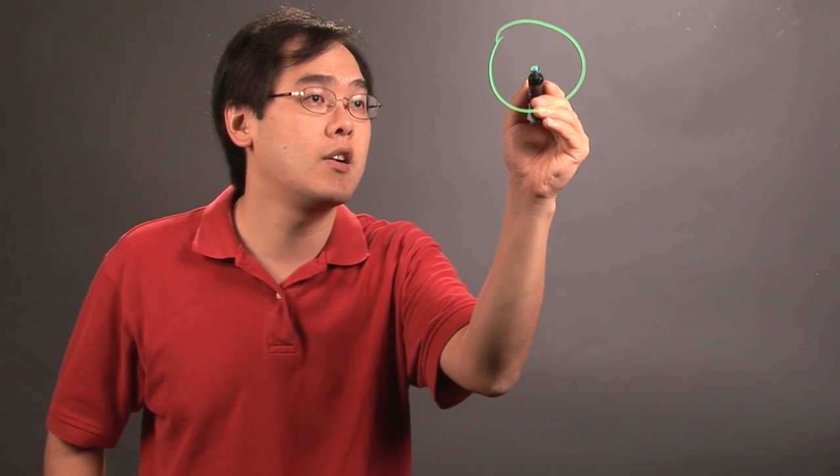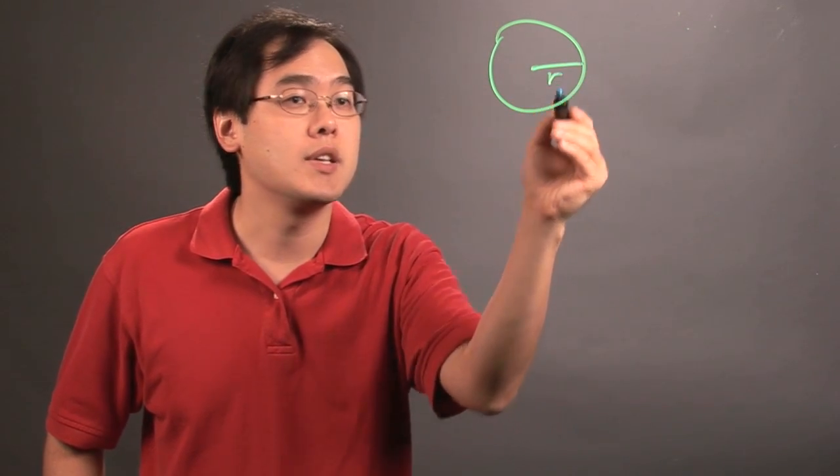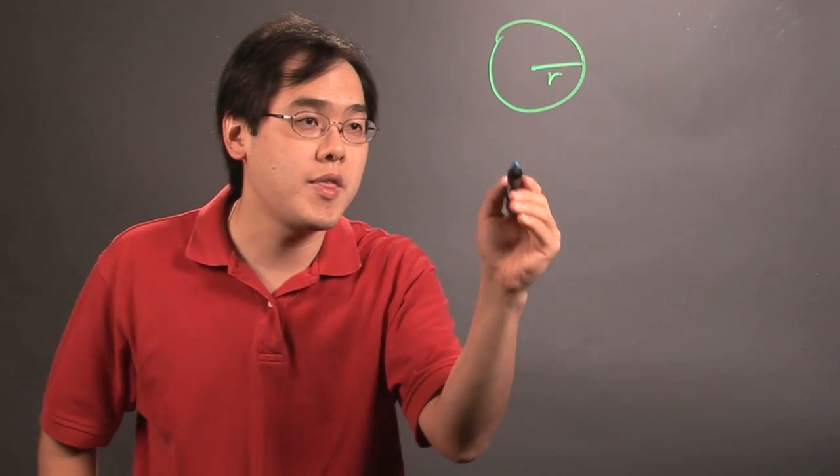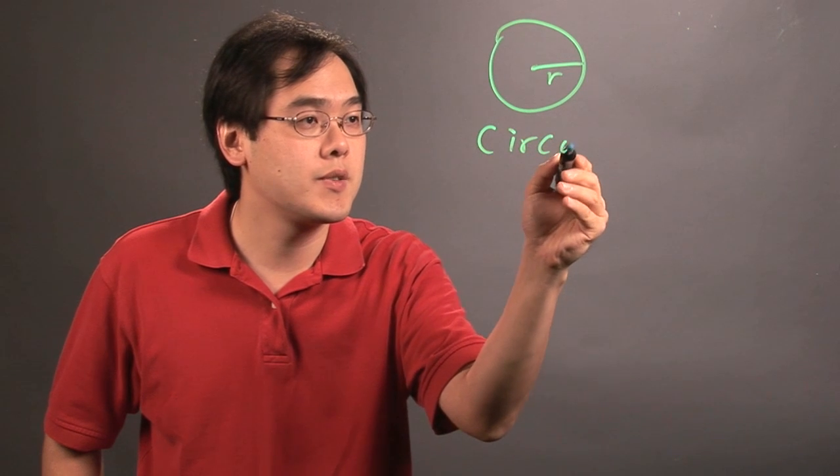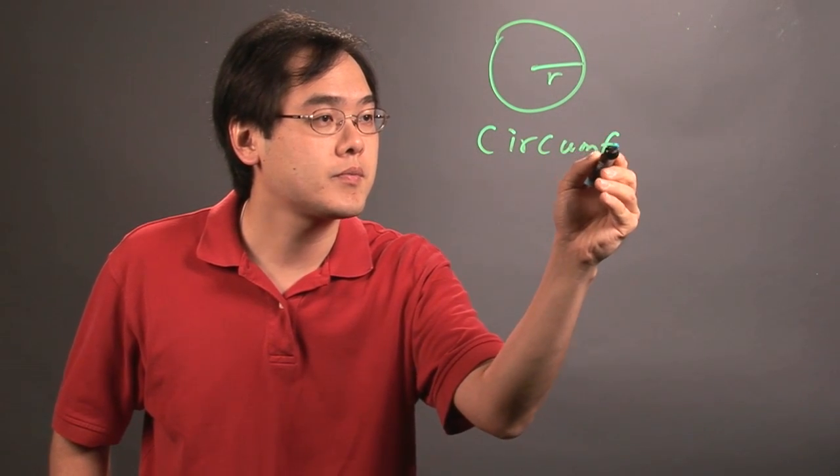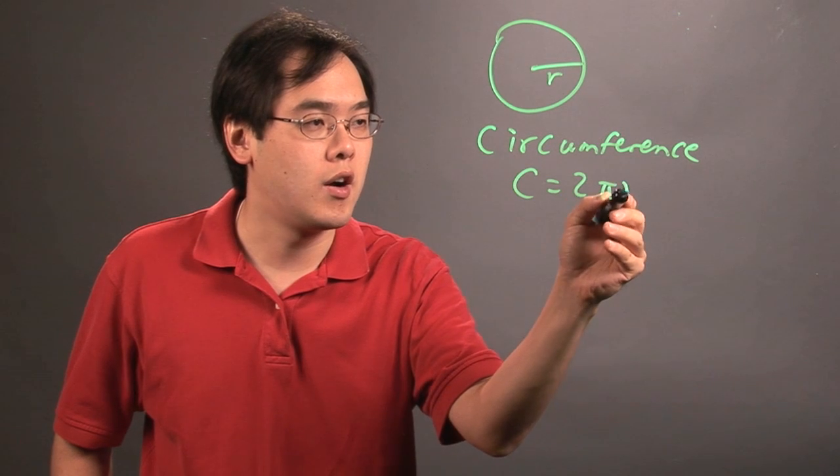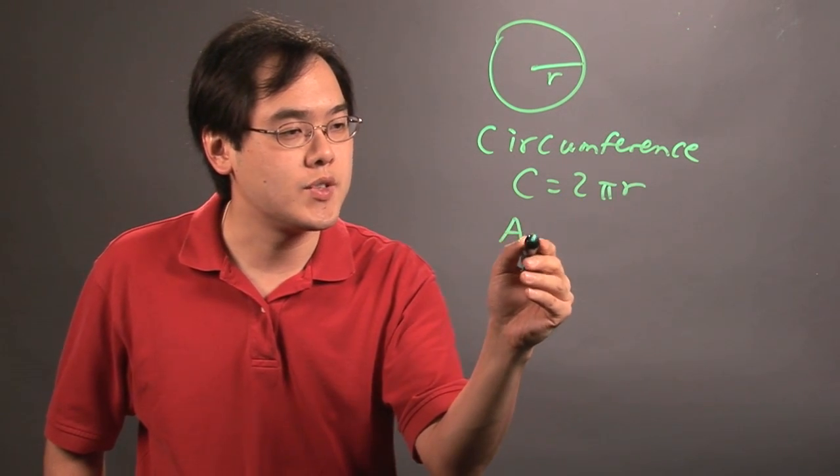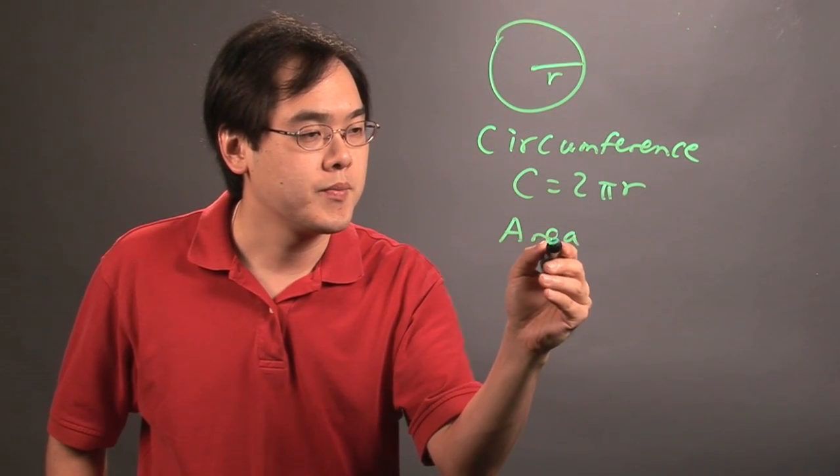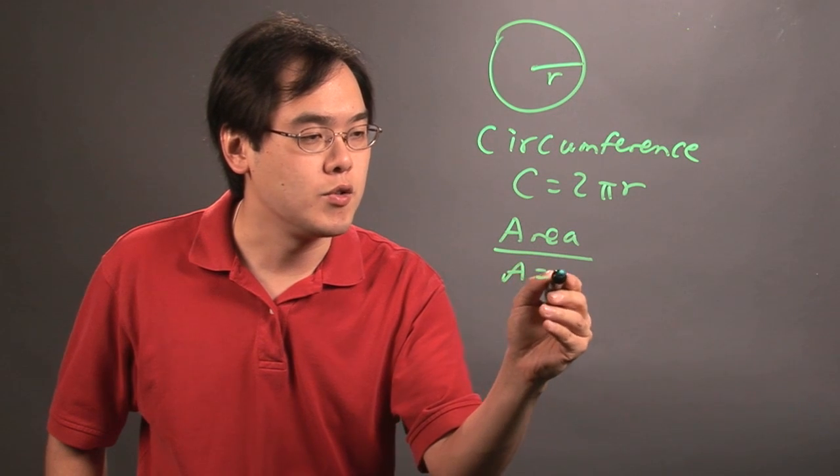And so, as you know, a circle has got a center along with a radius. And a couple of other formulas that are associated with that is the circumference, which is C equals 2πr, where r is the radius, or the area of a circle, which is A equals πr².